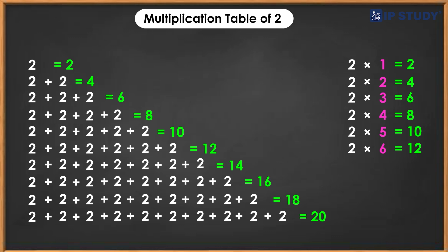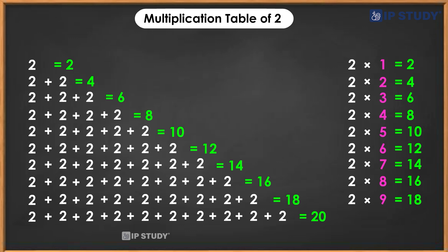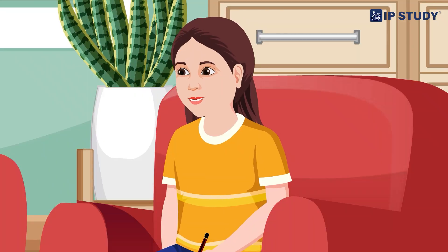Two by five, we get ten — it's like saying five times two equals ten. Two by six, we get twelve — it's like saying six times two equals twelve. Two by seven, we get fourteen — it's like saying seven times two equals fourteen. Two by eight, we get sixteen. Two by nine, we get eighteen — it's like saying nine times two equals eighteen. Two by ten, we get twenty — it's like saying ten times two equals twenty. Yes dad, I got it!